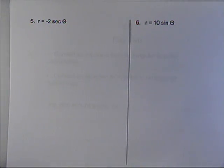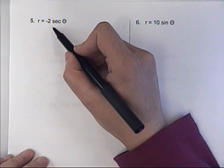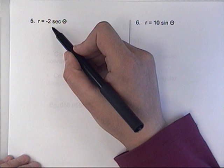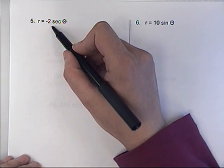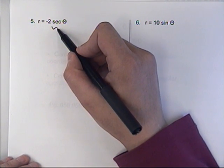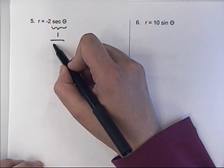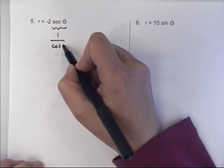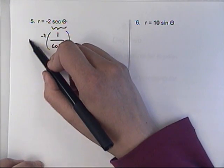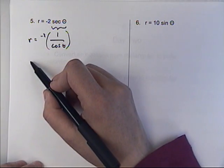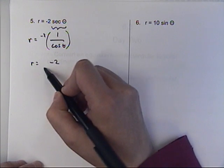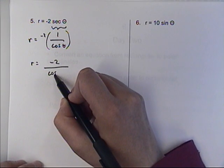So here's what I would do. I would say that secant is like cosine, but it's the reciprocal of cosine. So I could write this as 1 over cosine of theta, right? So if I'm multiplying that by negative 2, it's basically the fraction negative 2 over cosine theta.